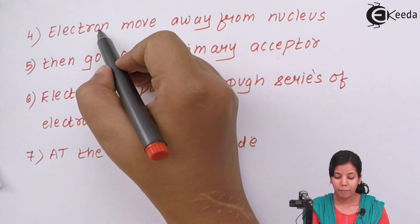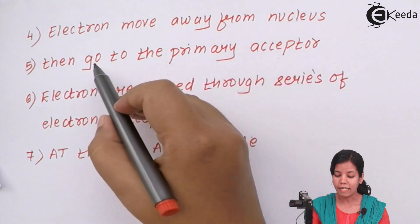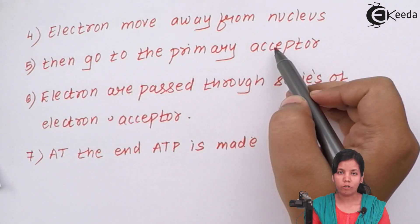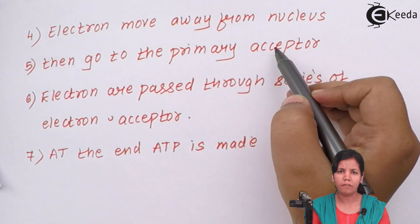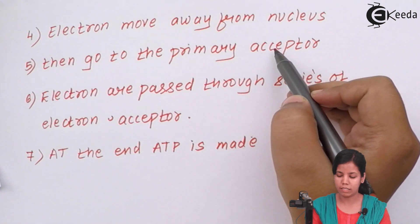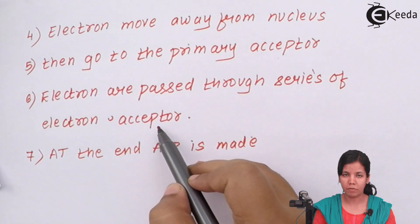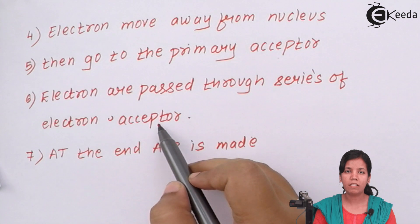In the next step, electrons move away from the nucleus, then go to the first primary acceptor. It could be cytochrome B, cytochrome F, whatever, depending upon the photosystem. Then electrons are passed through a series of electron acceptors - the same electron acceptors which are present in photosystem 1 and photosystem 2.